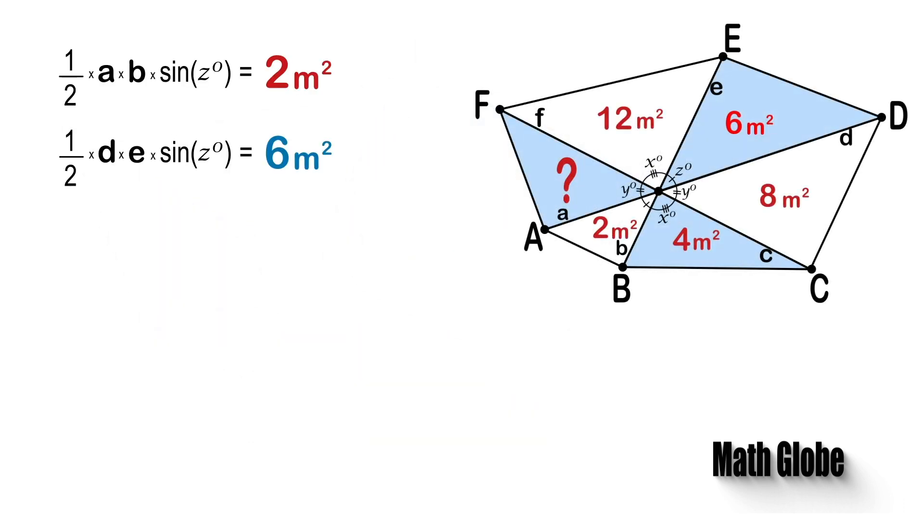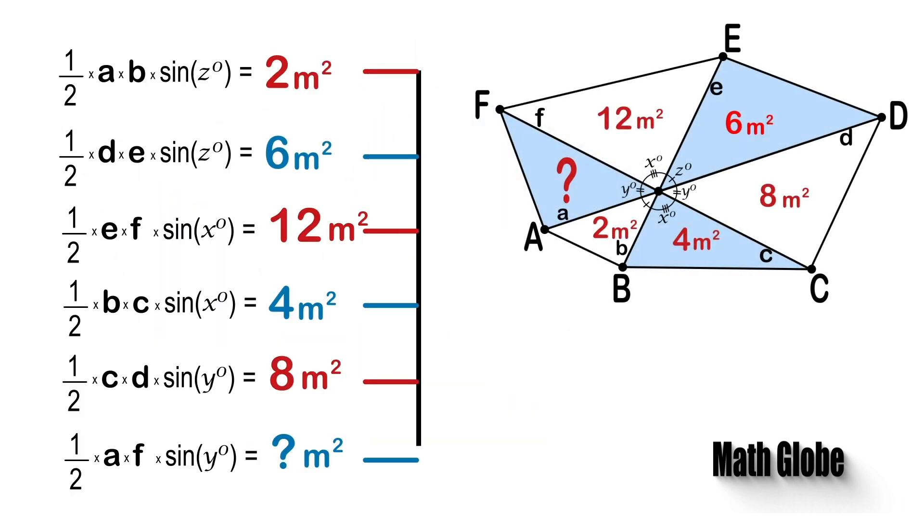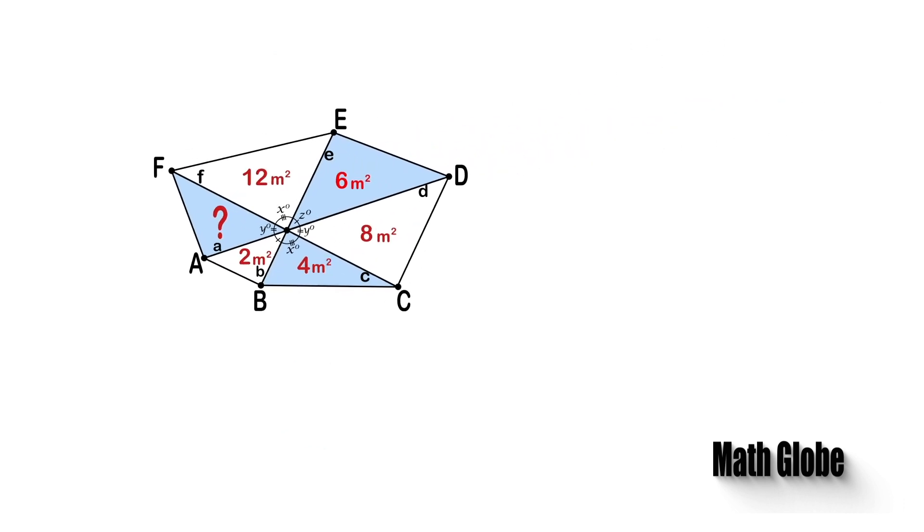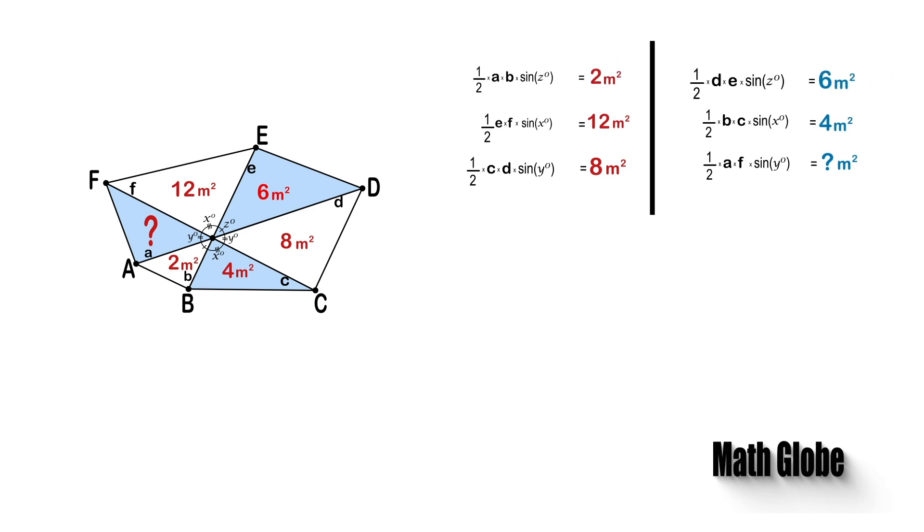After having named the angles and the edge lengths, we can write the area equations for each triangle as follows. For simplicity, we can split them into two groups as per the angles as shown.